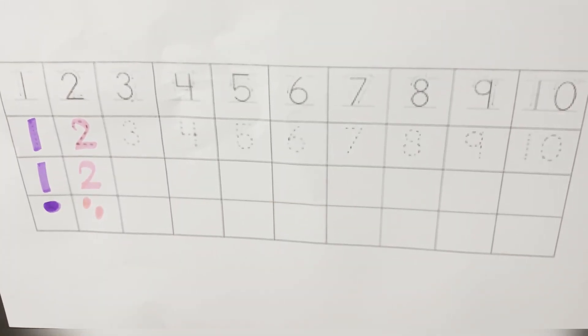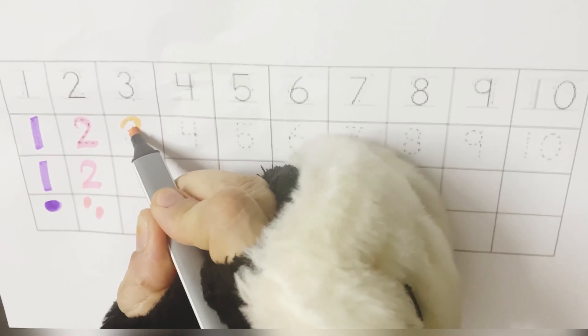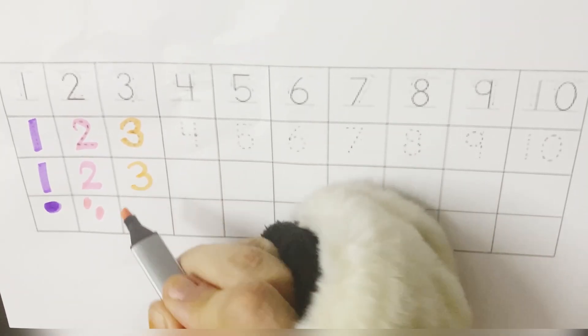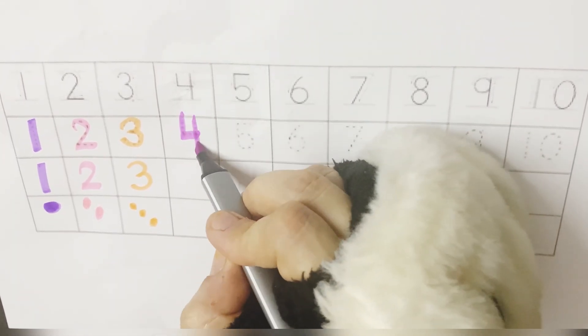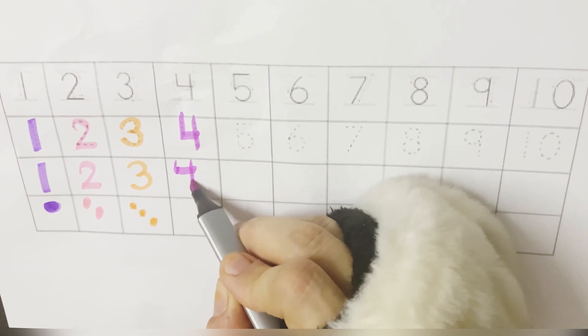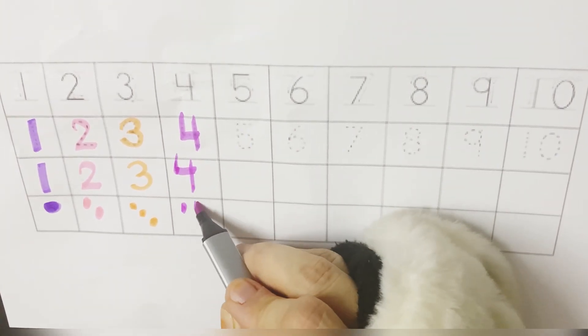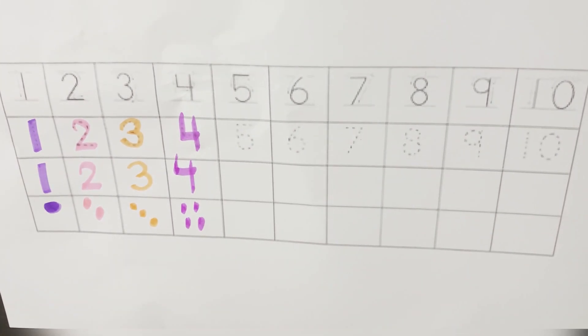What comes after two? It's three. Three. One, two, three. What comes after three? Four. Four. One, two, three, four.